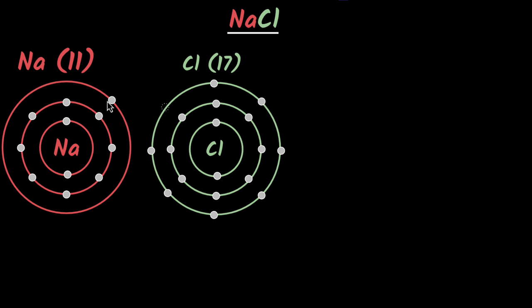Look at what is happening: sodium wants to get rid of its electron to achieve stability, and chlorine wants to gain one electron to achieve stability — that's such a great deal. So when sodium and chlorine come together and the conditions are right, sodium will transfer one electron to chlorine. Sodium becomes happy, chlorine becomes happy.